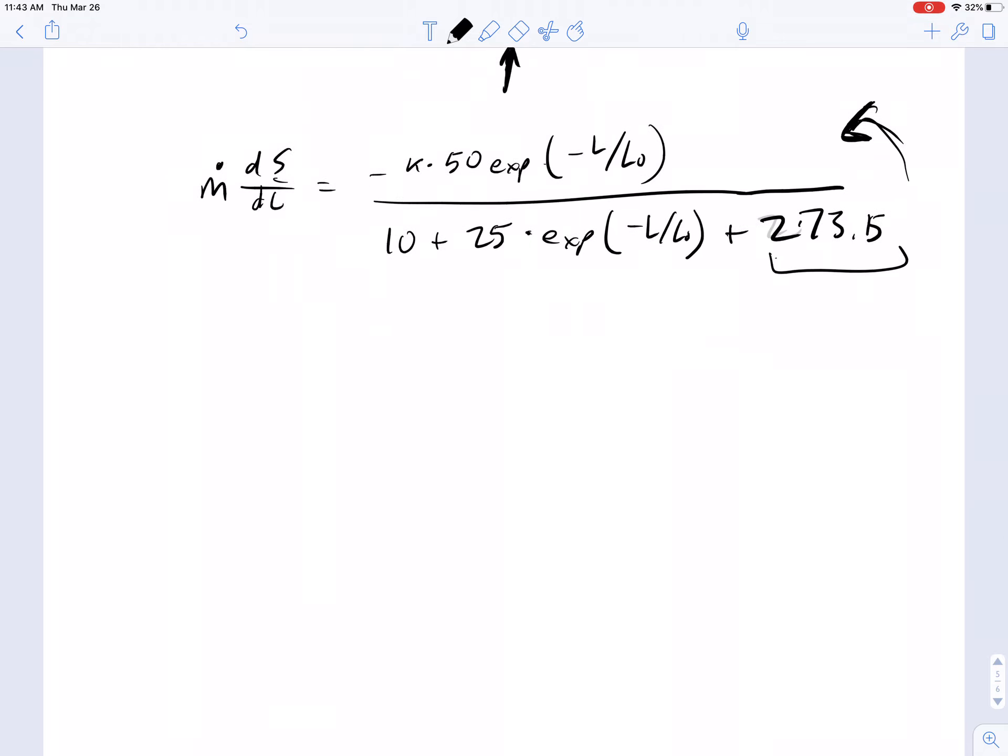Now we can separate the variables and begin to solve this problem. We're going to have dS on this side is equal to minus 50 times K times L0, all divided by the mass flow rate M times EXP of minus L by L0, all divided by 283.15 plus 25 EXP minus L by L0. And we'll just do this derivative with respect to DL or DL by L0. It doesn't matter because L0 is a constant, derivative of a constant just multiplies through.